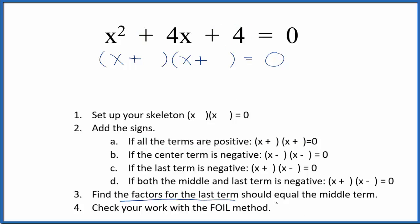Once we have the signs we can find the factors for the last term, that's the 4, that'll be equal to the middle term, that's the 4 here on the 4x. So the factors of 4: 4 times 1 equals 4 and 2 times 2. We can see 2 plus 2 would give us the 4 in the middle, so we know that these are going to be 2 here because 2 plus 2 equals the 4.